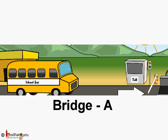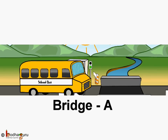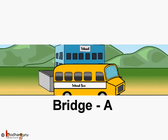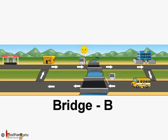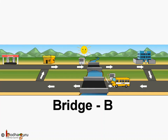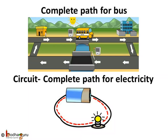Like the bus's complete path — starting near Aman's home using bridge A, then reaching the school, and after school the bus going back to Aman's house using bridge B — the current also needs a complete path to flow, that is, coming back to the starting point again. This complete path is called a circuit.